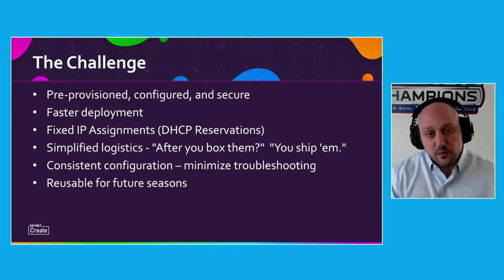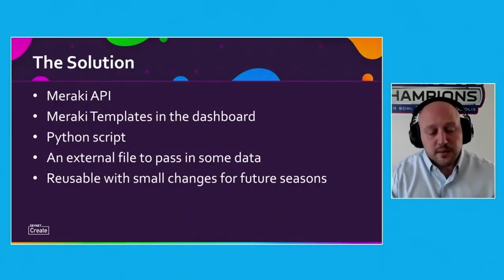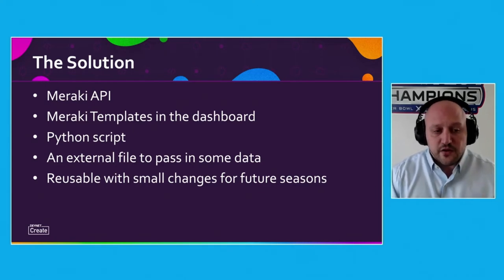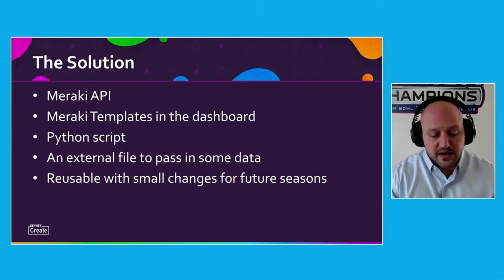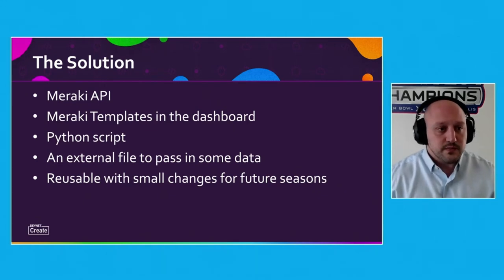The ideal was that whatever the solution is, to take it and be able to use it again next year. Again, this is a seasonal business, so around this time of year, provision the stores and then be able to do it again next year. The solution involved heavy use of the Meraki API, the Meraki templates that I alluded to earlier, Python as the programming language with a single script, an external file containing information for those fixed IP assignments or DHCP reservations, and then only a very small number of changes would be needed from this season to the same season next year.